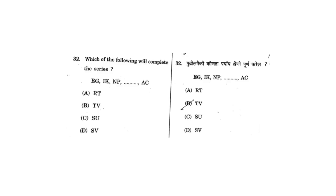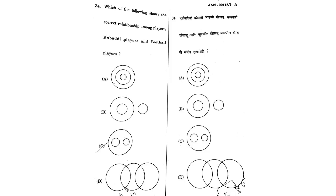For the next question — which of the following will complete the series — if you look at the options ABCD, the correct answer turns out to be TV. The correct answer for this is B, that is TV.